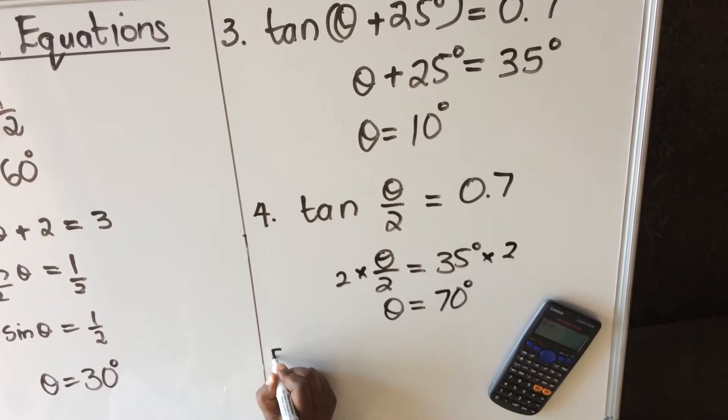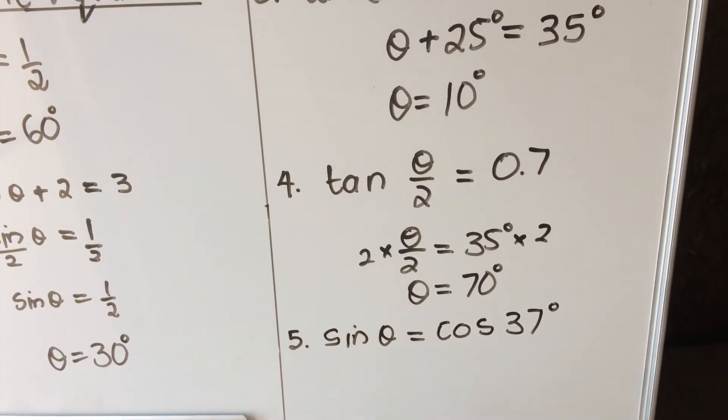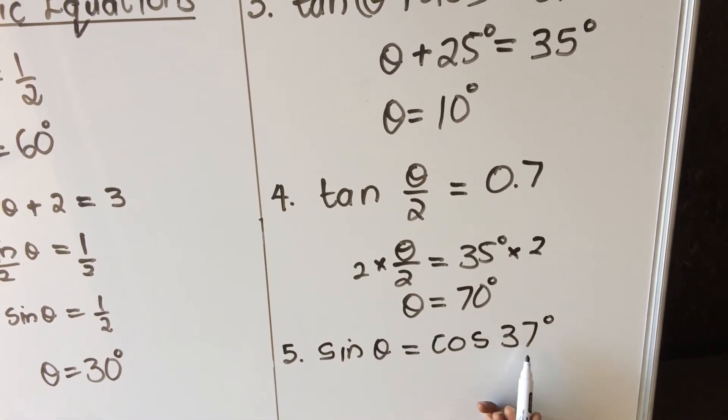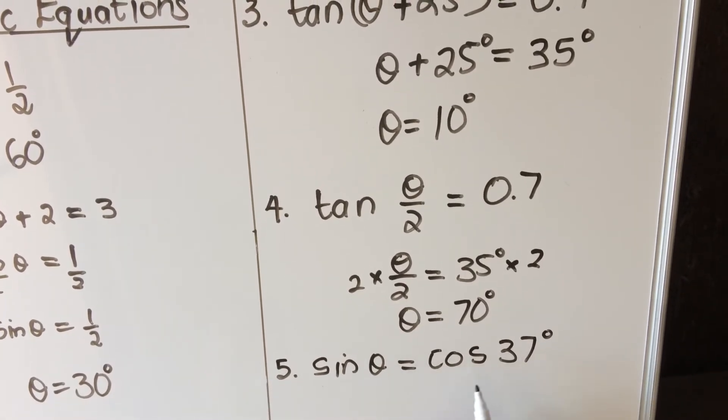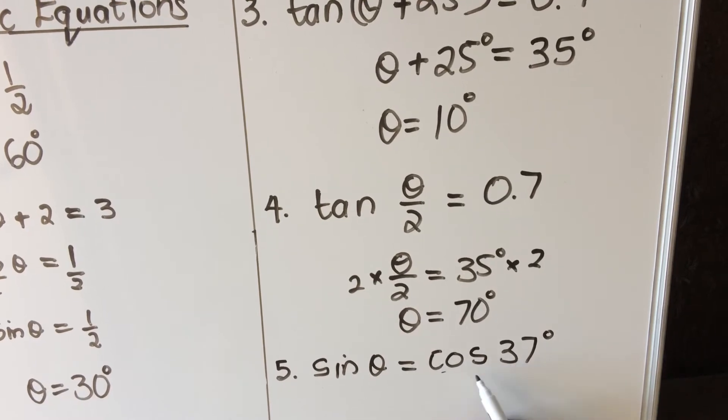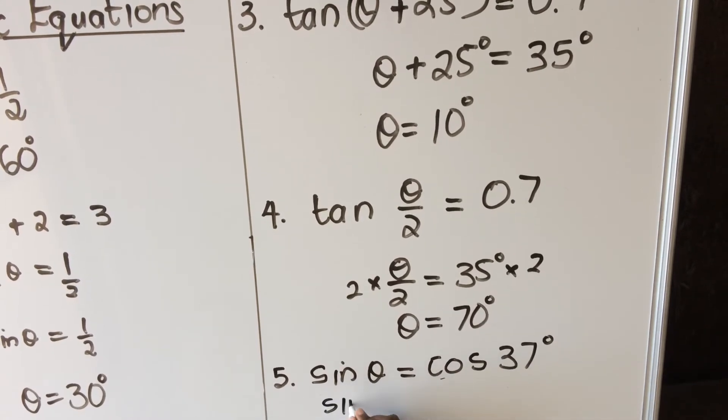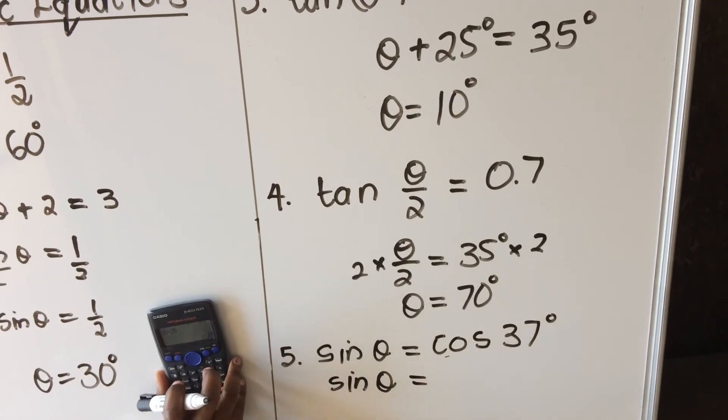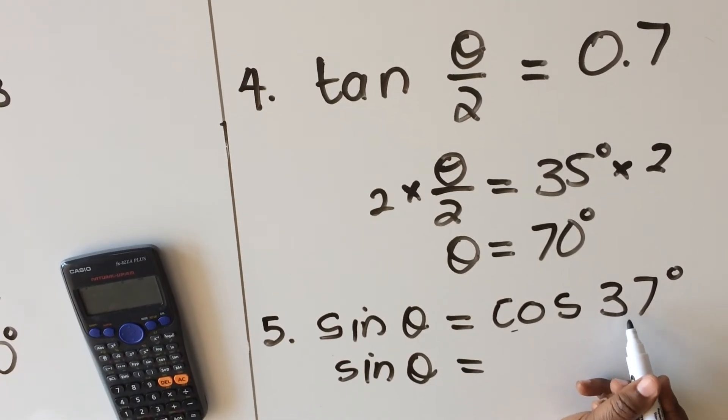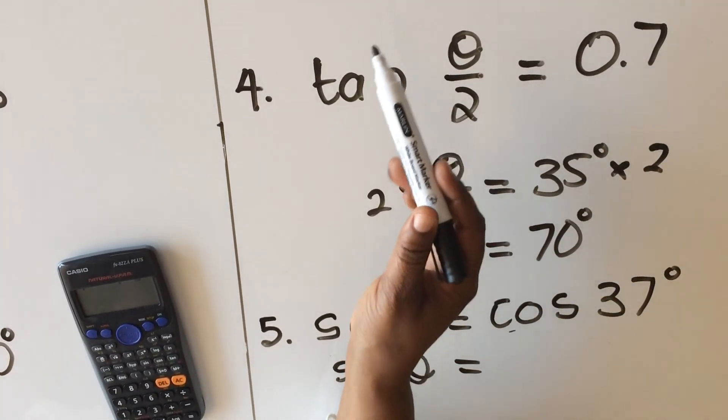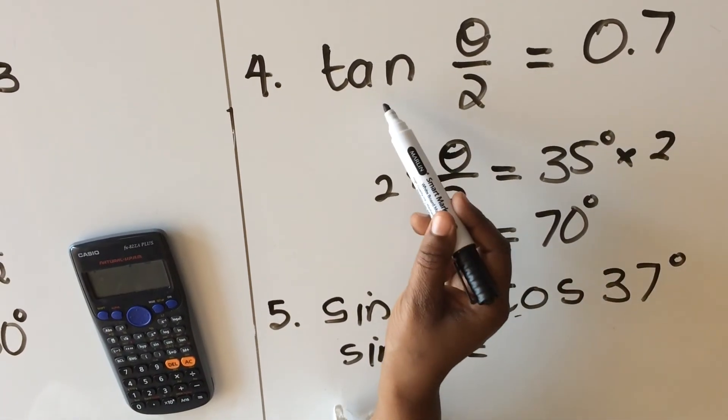The fifth one usually throws learners off where you have a ratio and another ratio, and then they don't know how to solve the equation. But look at this one: cos 37 is actually a number, so you start by punching this in your calculator and get a number. So you'll have sin theta equals... What I want you to remember is that I am not looking for an angle. I have an angle.